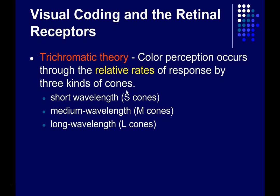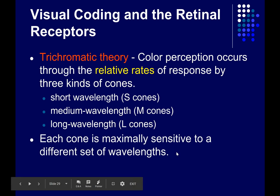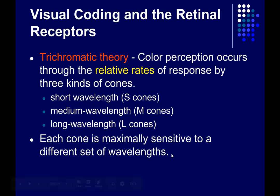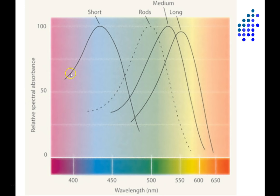We do have three cone types: short wavelength cones, also called S cones; medium wavelength, M cones; and long wavelength, L cones. Each of these cones is maximally sensitive to a different set of wavelengths within the visible spectrum. And together, they cover the full visible spectrum. In fact, the reason the visible spectrum is visible is because these three cone types are sensitive to those wavelengths.